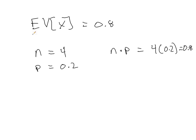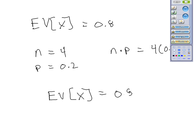So expected value of X from the previous page is equal to 0.8. Now, we won't prove this here, but n in this situation was 4. The probability of success was 0.2. And it just so turns out that if I take n times p, I get 4 times 0.2, which, guess what that is? 0.8. So the expected value of X in this case was just n times p, which is 0.8.